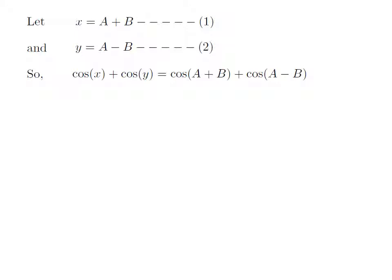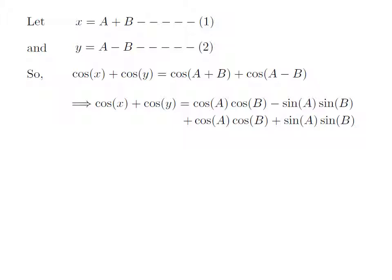Cosine of x plus cosine of y is equal to cosine of a plus b plus cosine of a minus b, as x is equal to a plus b and y is equal to a minus b as per our assumption. Expanding cosine of a plus b and cosine of a minus b: cosine of x plus cosine of y is equal to cosine of a times cosine of b minus sine of a times sine of b, plus cosine of a times cosine of b plus sine of a times sine of b, which is the expansion of cosine of a minus b.